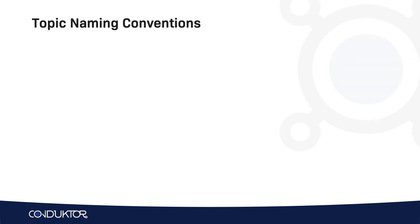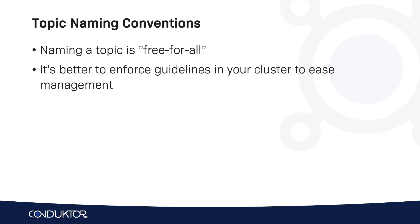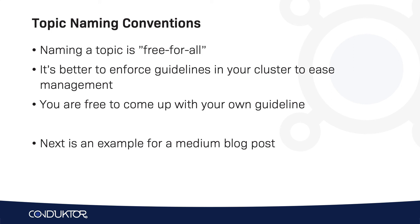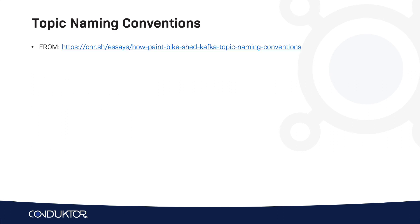Finally, I just want to touch upon topic naming conventions. Topic naming is a free-for-all, so you can do whatever you want. But once you go into production with Kafka, you need to enforce guidelines internally to ease management of your cluster. There is a medium post I really like that I'll summarize in the next slide — it recommends naming your topics as: message type dot dataset name dot data name. You're free to come up with your own topic naming convention.